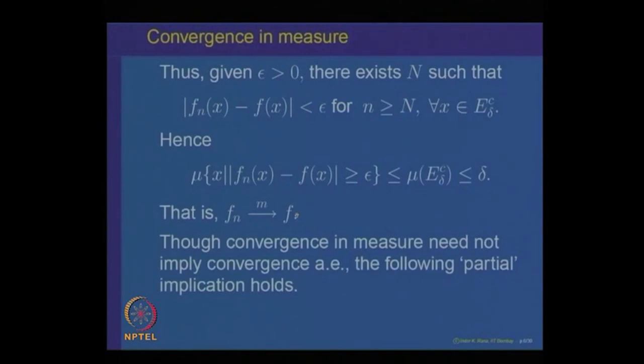We have shown that almost uniform convergence implies convergence in measure. Now, convergence in measure need not imply convergence almost everywhere in general. However, one can prove a partial result: if F_n converges to F in measure, then there is a subsequence which converges almost everywhere. This result is quite useful when analyzing sequences of measurable functions which converge in measure. This theorem is called the Riesz theorem.